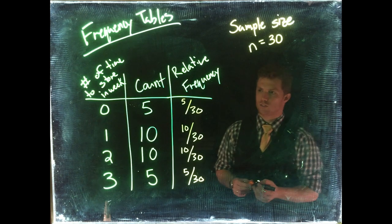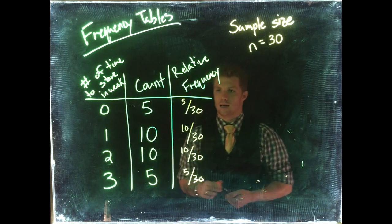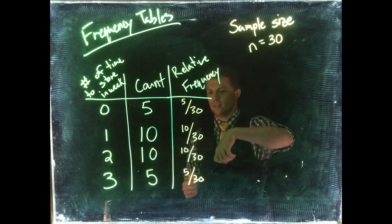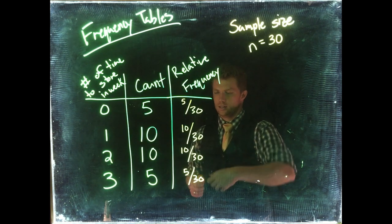That would be the relative frequency. If we translate those, we can simplify: that's one-sixth, one-third, one-third, and one-sixth.